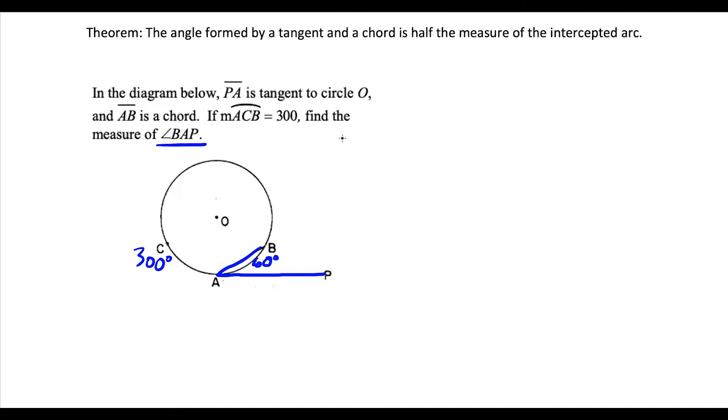To use this theorem, we have a chord AB and tangent AP. This tells us the measure of the inscribed angle is going to be half of that arc, which is 30 degrees.